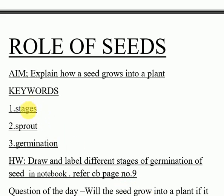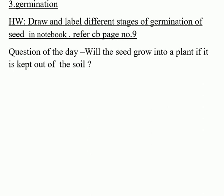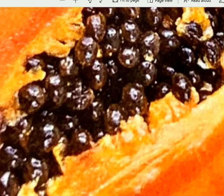Today's keywords are: stages, sprout, and germination. Your homework is to draw and label the different stages of germination of a seed in your notebook. After learning today, you have to draw that. You can refer to content book page number nine.